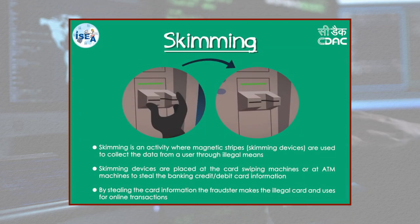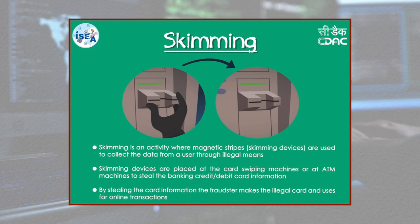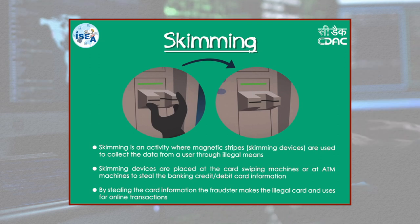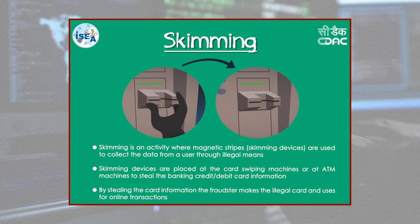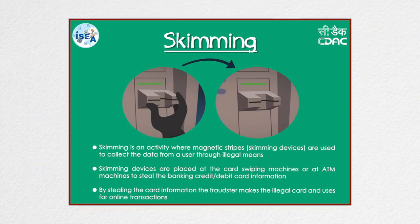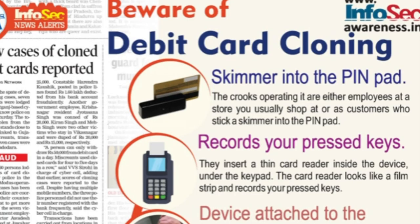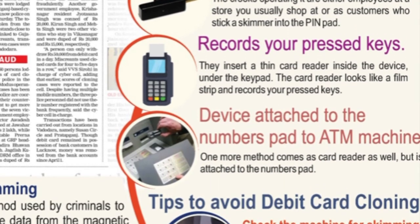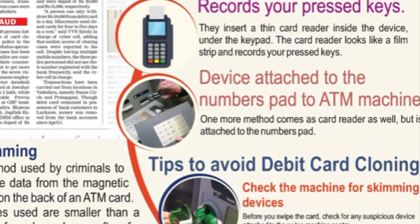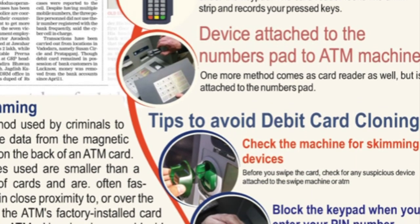Skimming is the theft of credit card or debit card information. A thief can procure the victim's credit card number using basic methods such as photocopying receipts, or more advanced methods such as using a small electronic device called a skimmer to swipe and store hundreds of victims' credit card numbers. Common scenarios for skimming are restaurants or bars where the skimmer has possession of the victim's credit card and makes note of card details for further use.